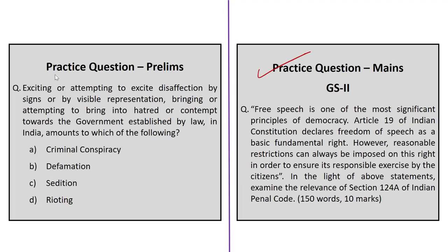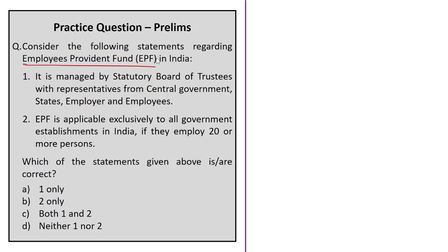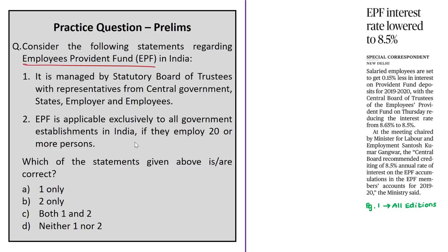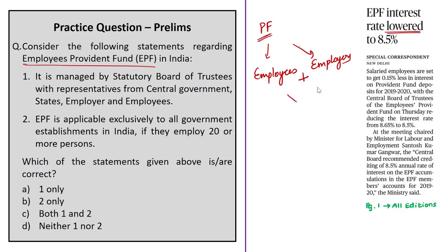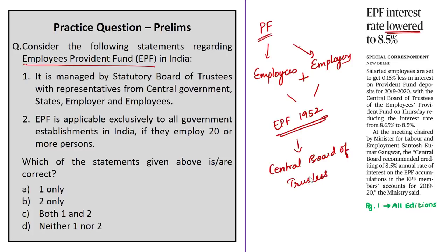Now let us take a question based on the Employees Provident Fund. The news mentions a reduction in interest rates for salaried employees under EPF deposits. Provident fund is a fund where deposits of employees are received on their individual accounts — employees give a portion of their salary and employers contribute on behalf of employees. In India, the EPF comes under the Employees Provident Funds and Miscellaneous Provisions Act of 1952, managed by the Central Board of Trustees of EPF, assisted by the EPFO.